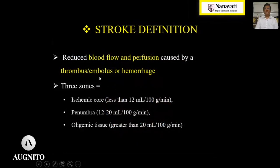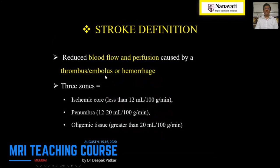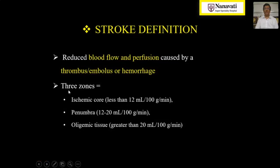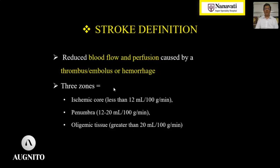What is the definition of stroke? It indicates reduced blood flow and perfusion caused by either thrombus or embolus in an artery, or hemorrhage. There are three zones of stroke in the brain. The ischemic core is where blood flow is less than 12 ml per 100 grams of brain per minute. Ischemic penumbra is where flow is between 12 to 20 ml, and oligemic tissue is an area where blood flow is more than 20 ml. Normal blood flow in the normal human brain is between 40 and 50 ml per minute.